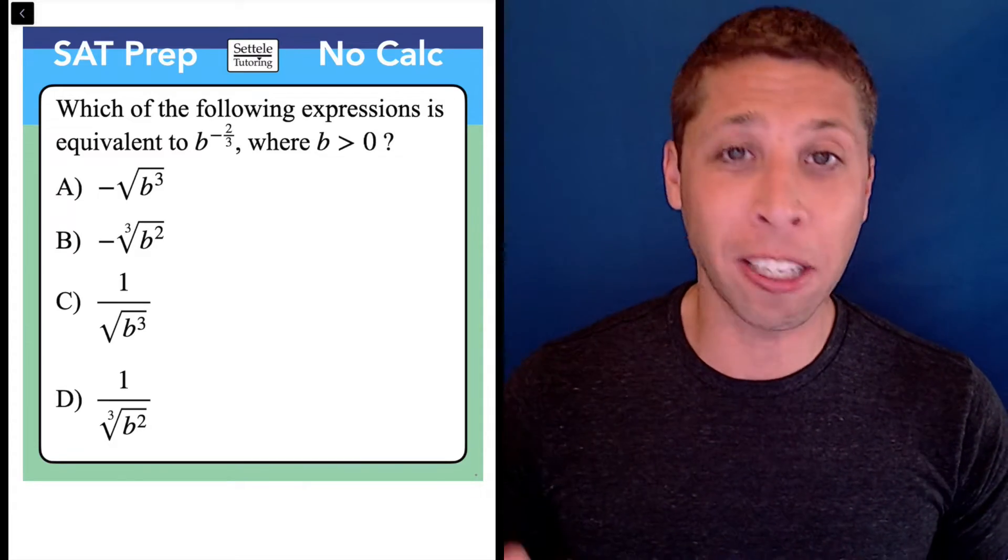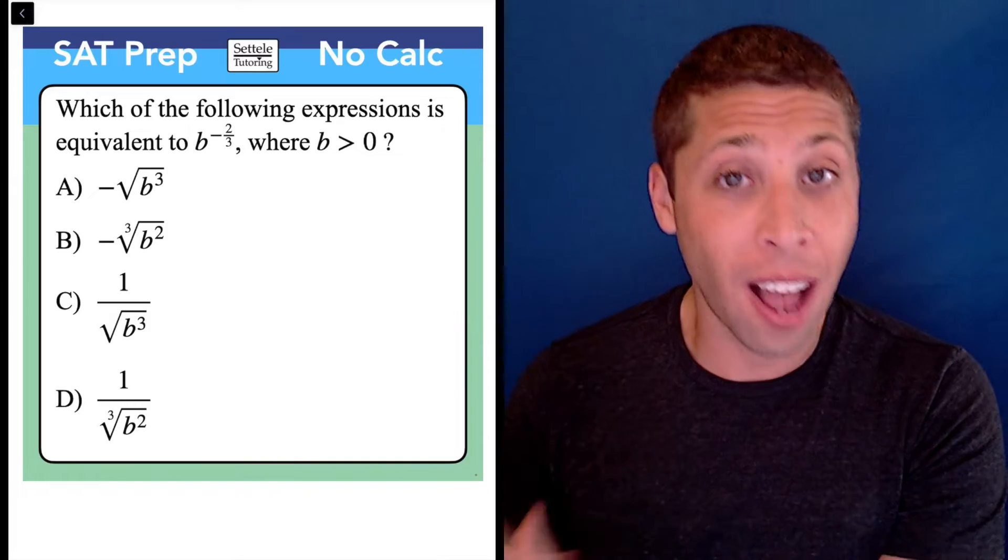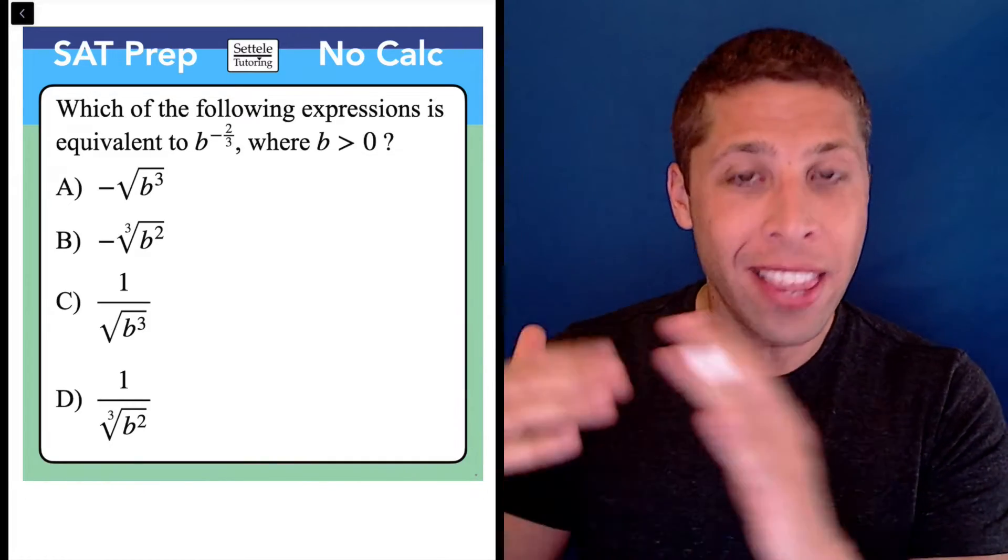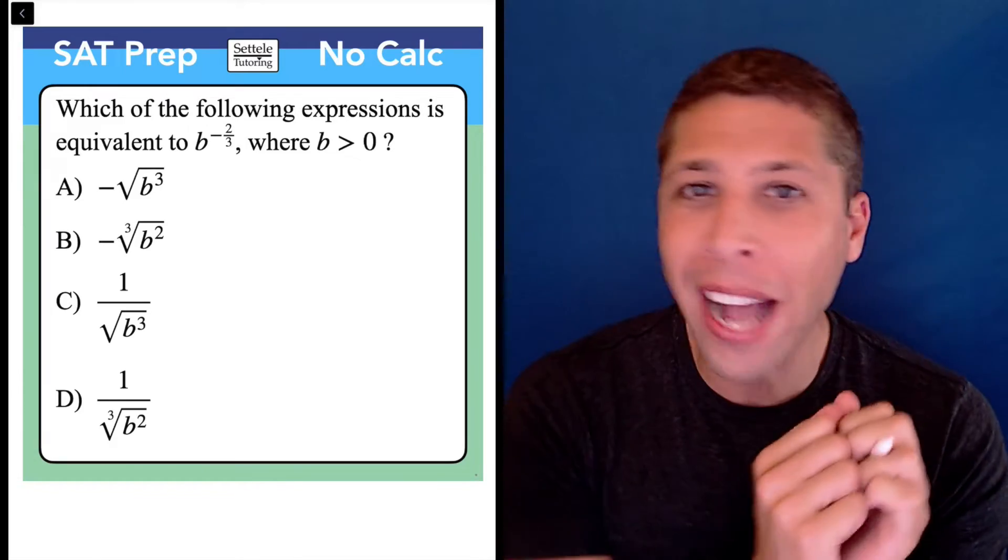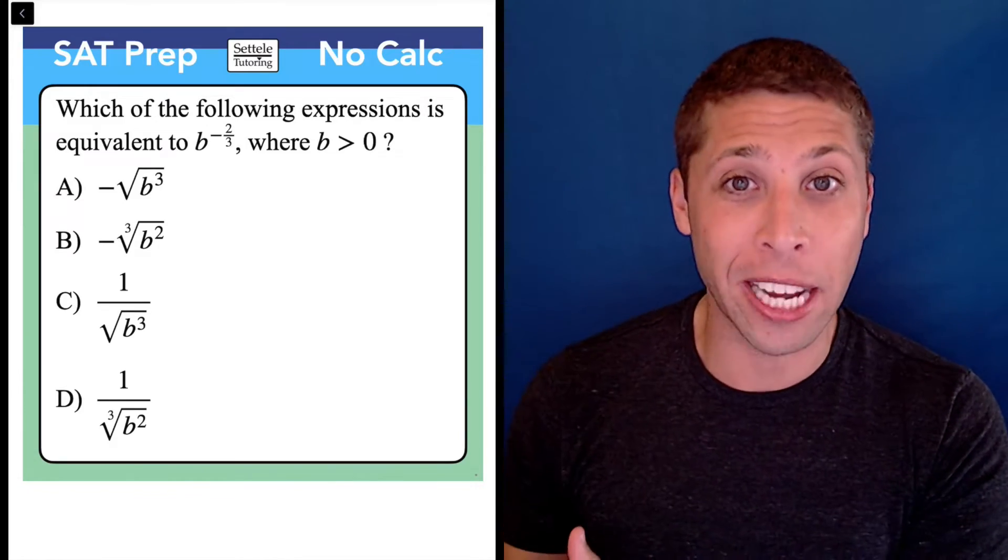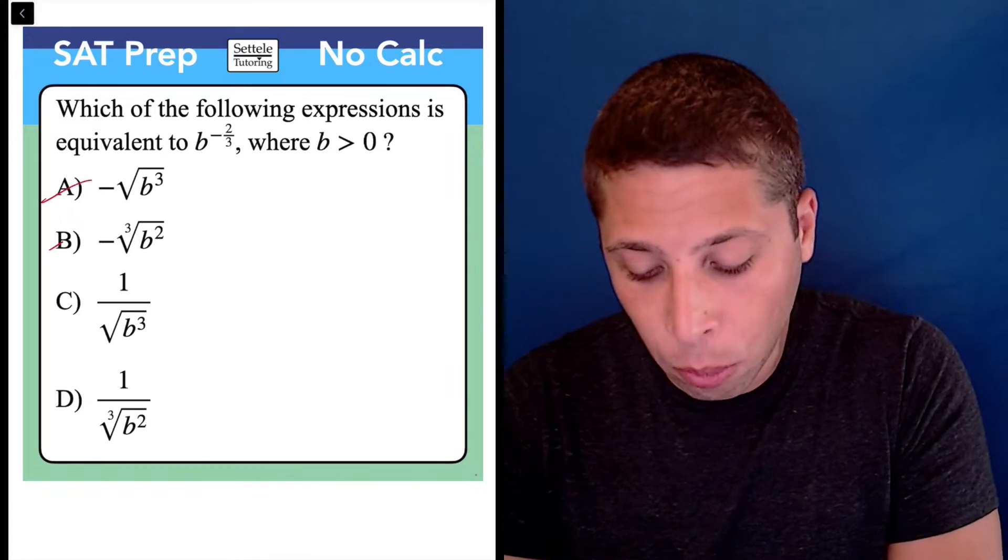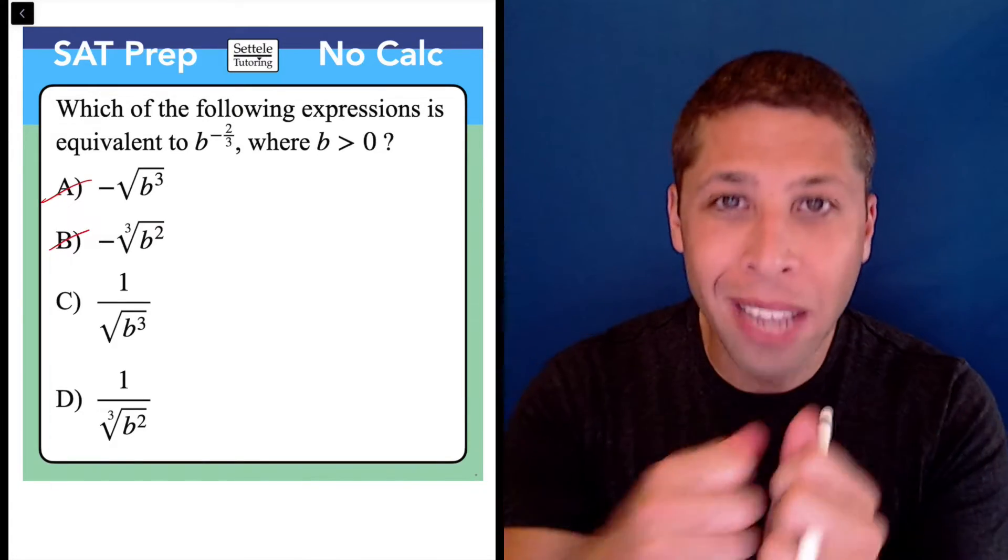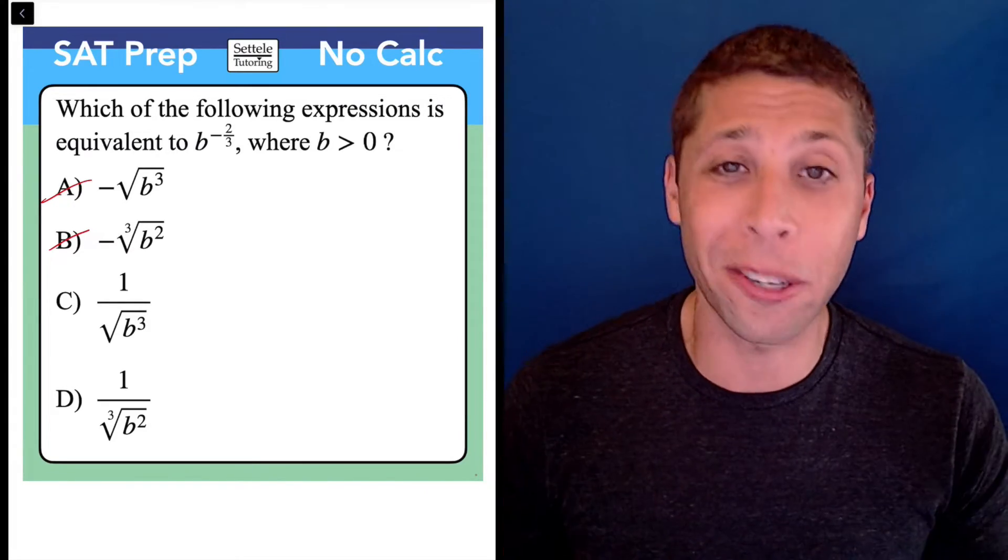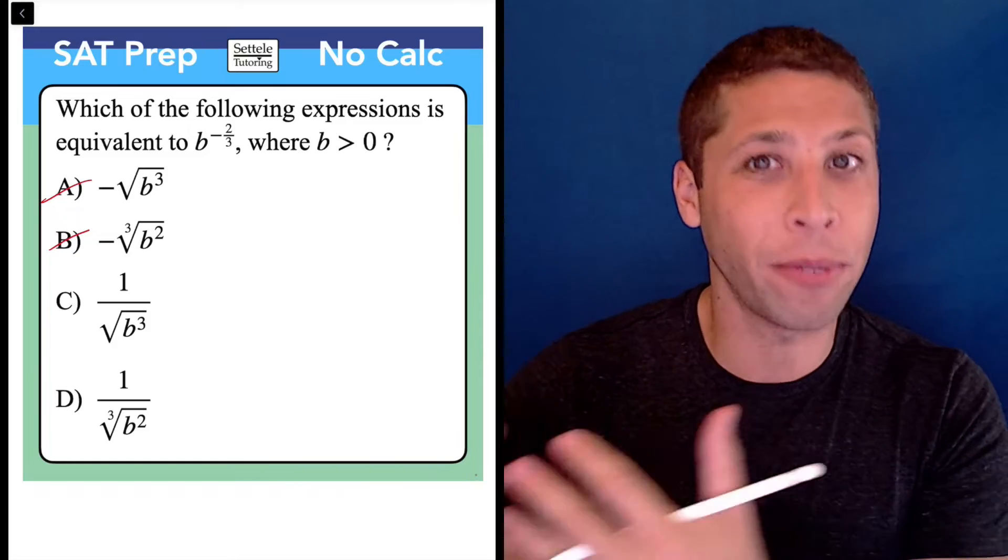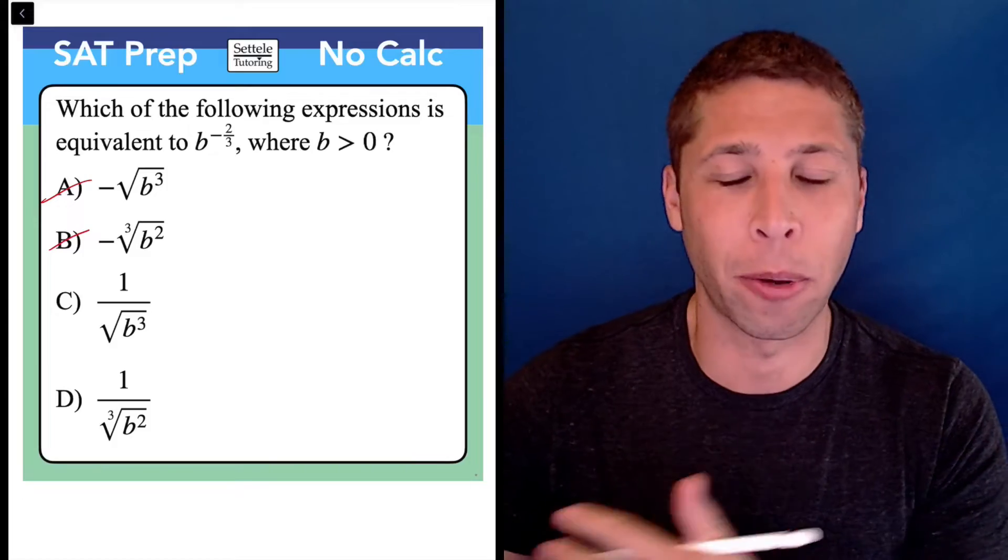So first and foremost, negative exponents have nothing to do with negatives that occur outside of the exponents. So the negative that is next to the two-thirds in the exponent is not going to magically appear outside of the exponent. It does stuff, it absolutely has an effect, but it's never going to do something like what's going on in A and B, where it comes out of the exponent. So sometimes this is a really helpful thing to remember because even if you have no idea what else is going on, you can at least get rid of these choices that spontaneously add a negative just because there was a negative in the exponent.